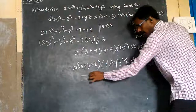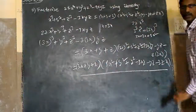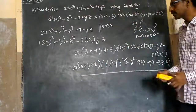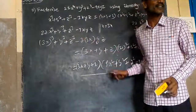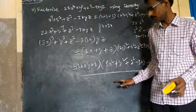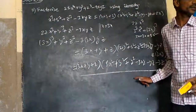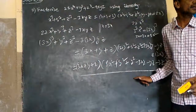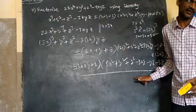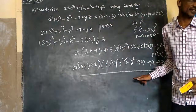So this expression is now written as a product of two factors. That is the application of this special identity.